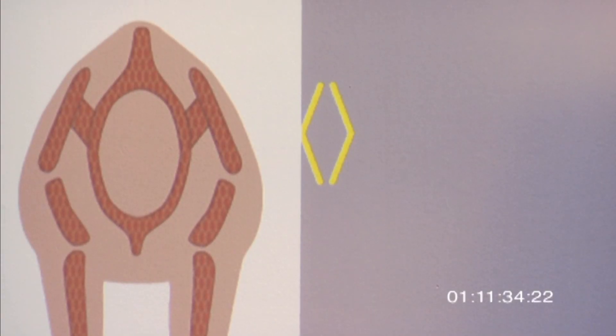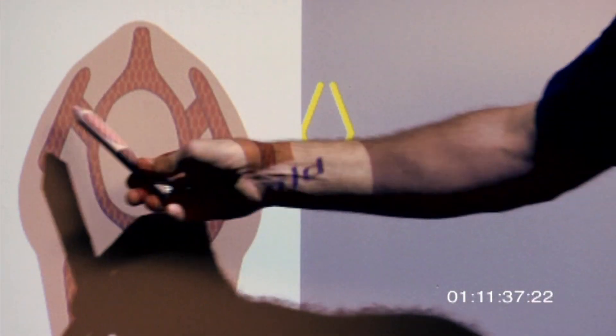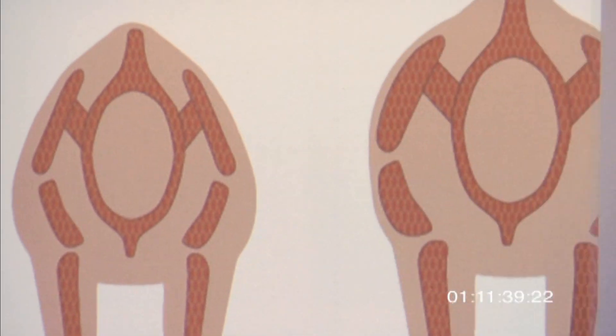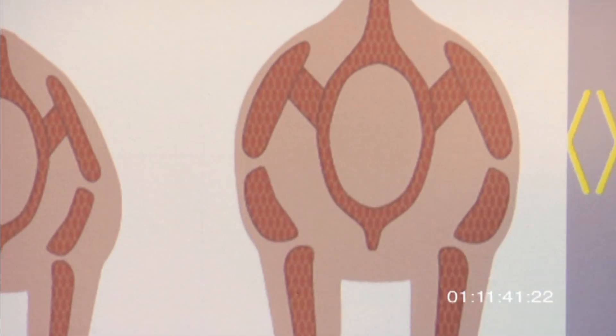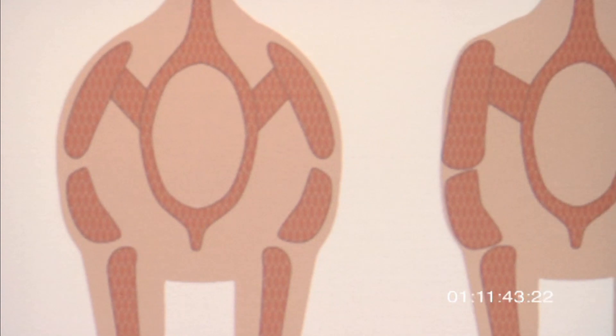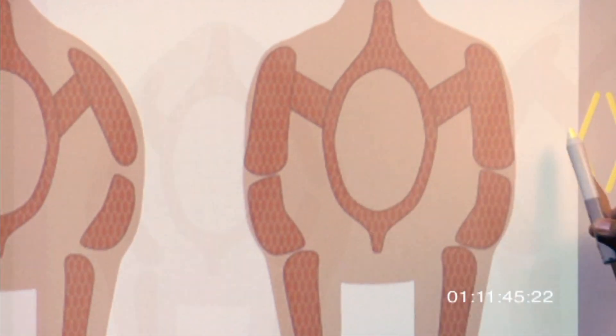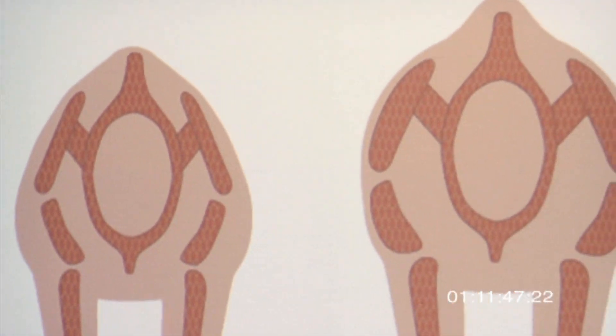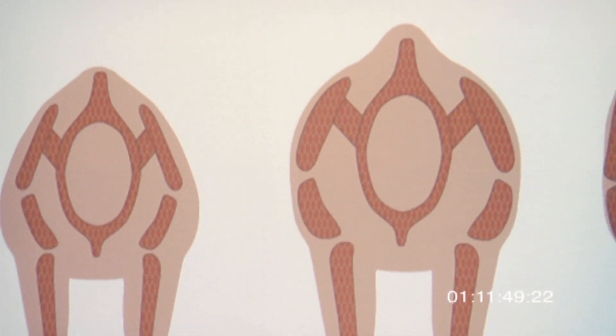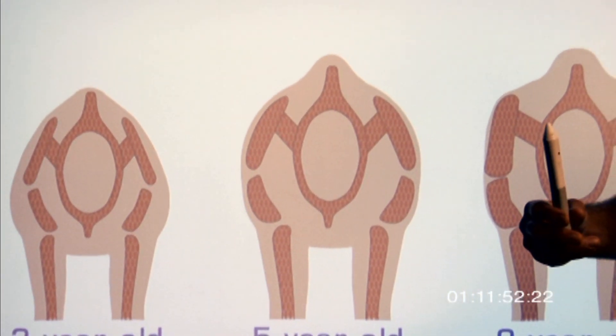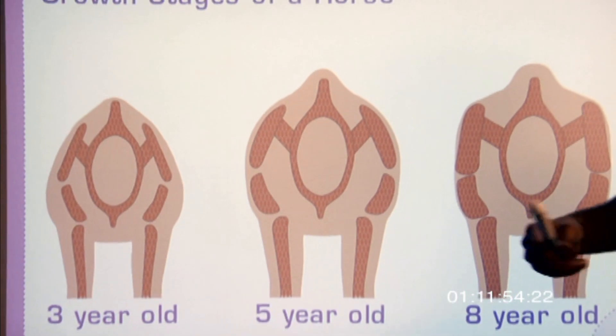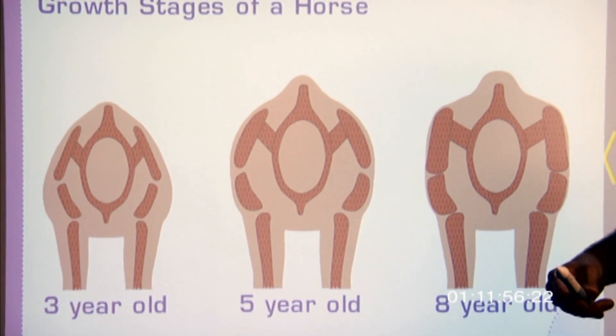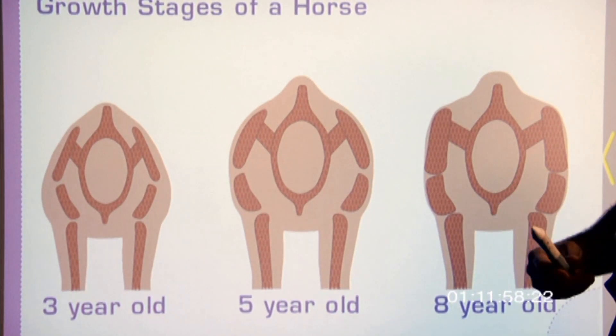When a horse matures, at three years, you can see how wide the shoulders are. At five years, the shoulders get wider. And then at eight years, the shoulders are really wide. So just like on human beings, when we work out and we lift weights, our shoulders get wider and has nothing to do just with the age. It has something to do with how we train.